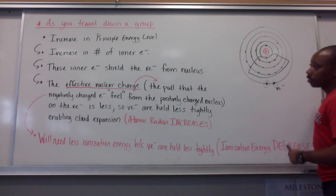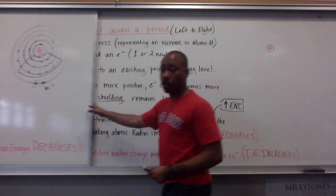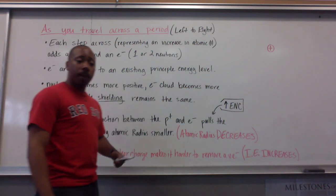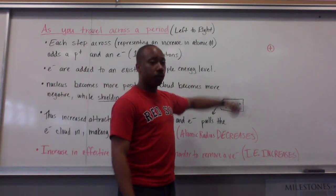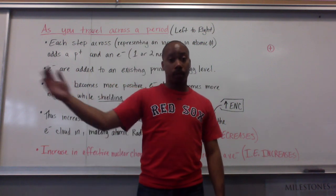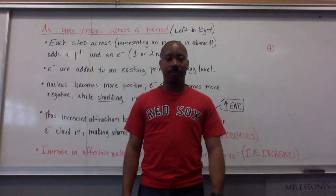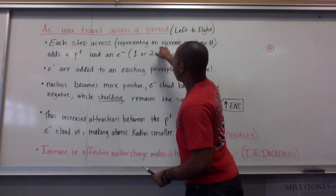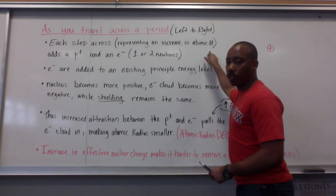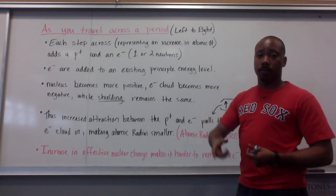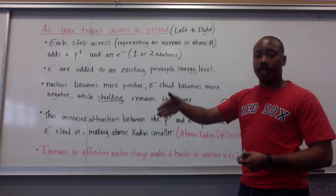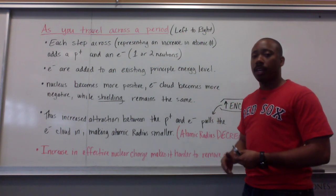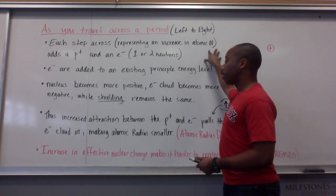Now let's look at the trends as we go across a period — across the periodic table. As you travel across the periodic table, reference is going from left to right. Each step across represents an increase in atomic number. So you're going from, let's say, sodium, Na, which is number 11, to magnesium number 12, to aluminum number 13, 14, 15, 16, 17, etc. Each step across represents an increase in atomic number.